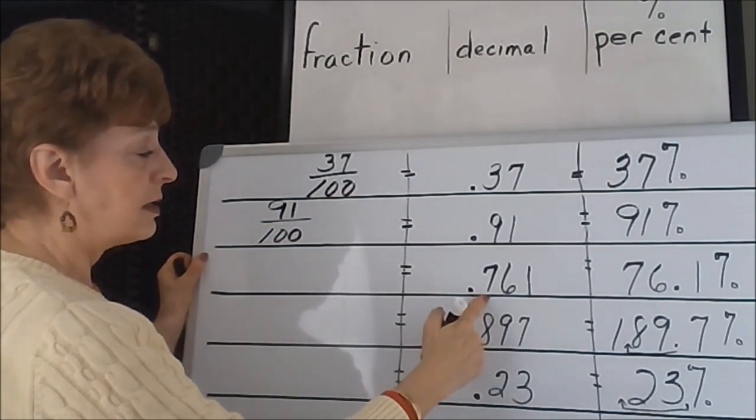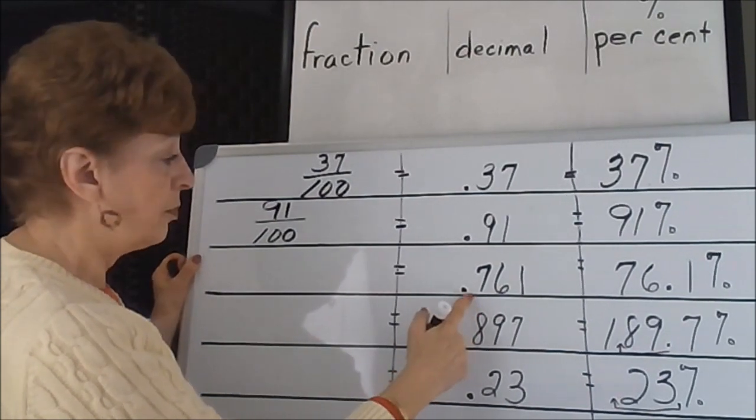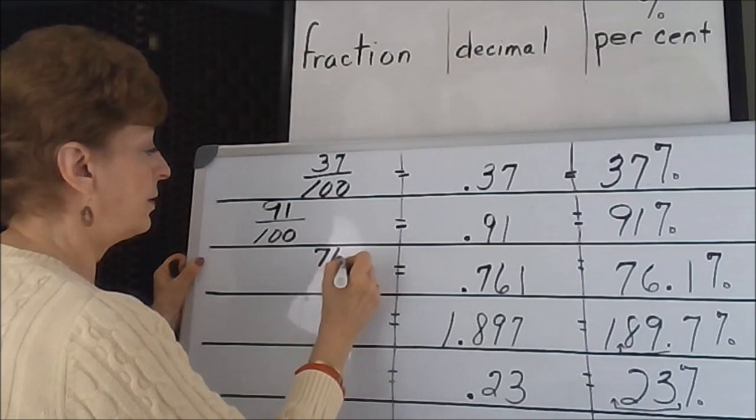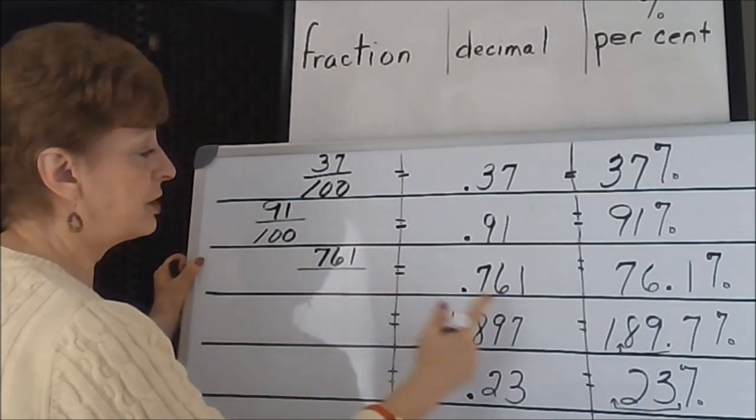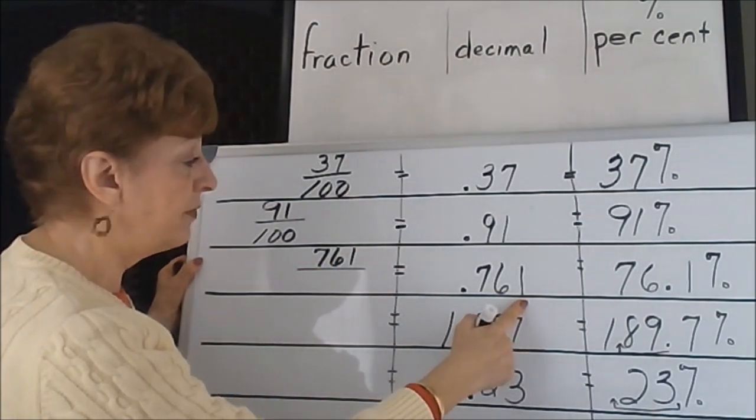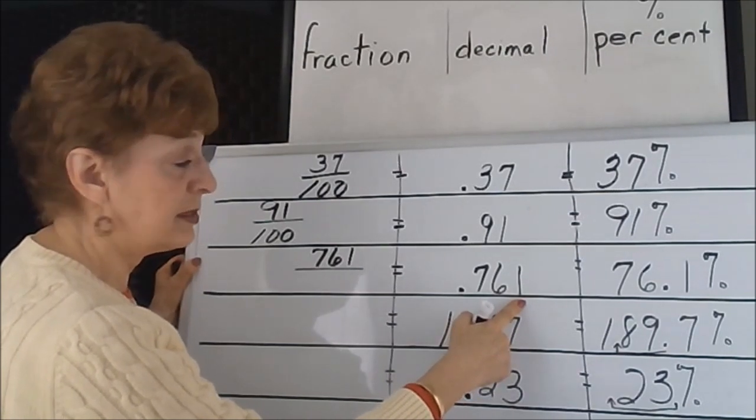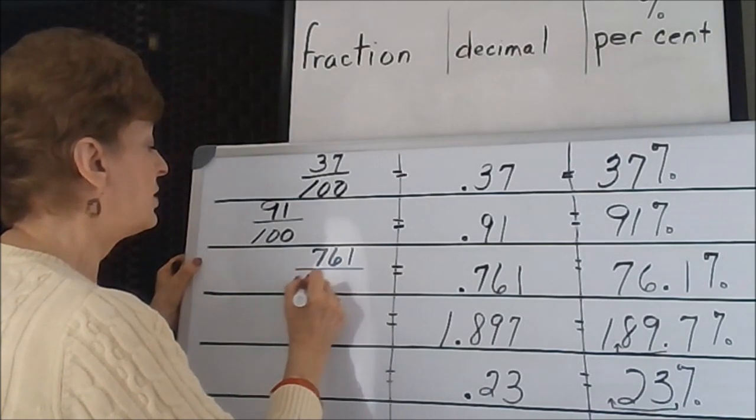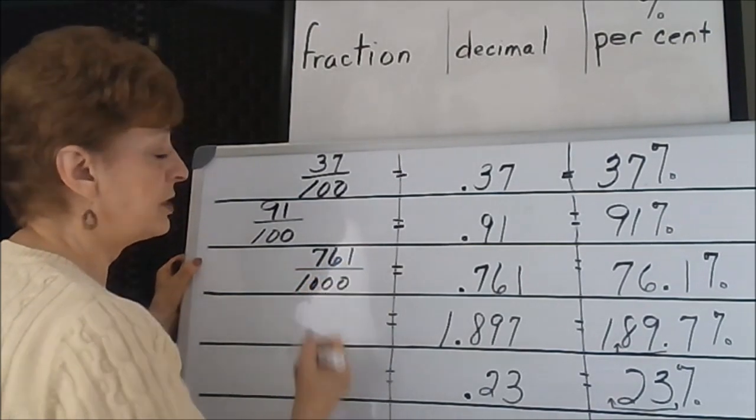0.761, that is also the numerator of this fraction, but we're now going to be looking at the last digit of this number. It's in the tens, hundreds, thousandths column, so our denominator on this fraction is 1,000: 761/1000.